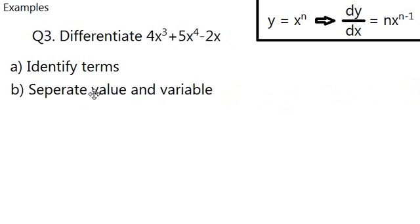Separate them into values and variables, which I've talked about in chapter 1. So you should be able to get these 3 things separated: 4 times x cubed, 5 times x to the power of 4, and minus 2 times x to the power of 1.